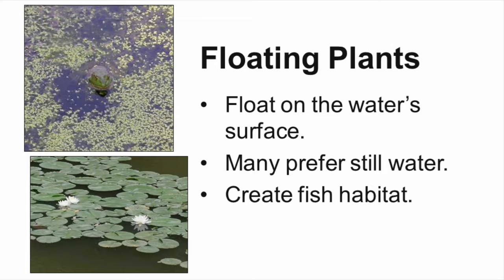Floating aquatic plants are those that float on the water's surface with their roots dangling below them. Many of these plants prefer water that is very still. Duckweed, seen in the top picture, is a very tiny floating plant that can grow to look like a thick carpet covering an entire pond. It can be a great source of food for waterfowl. Water lily, pictured below, is a floating plant having very large leaves that can be nearly 12 inches wide. It provides an ideal habitat for fish and aquatic insects.